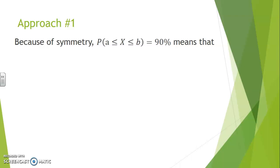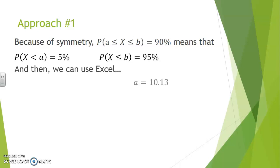In approach number one, saying that P of X is between a and b equals 90% means that the probability of being left of a is 5%. It also means the probability of being left of b is 95%.